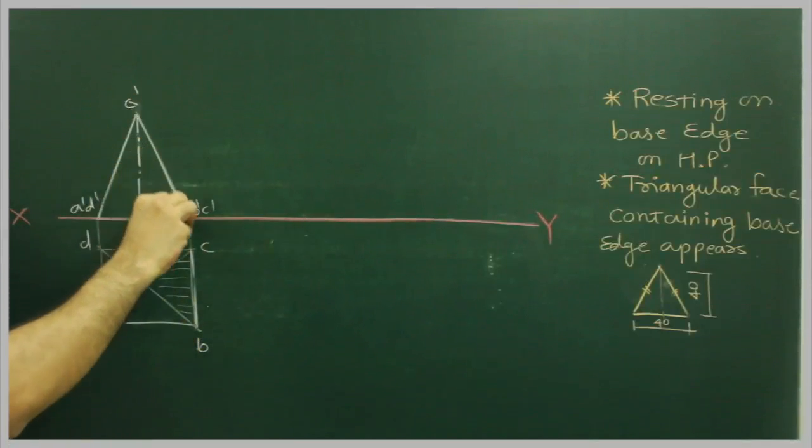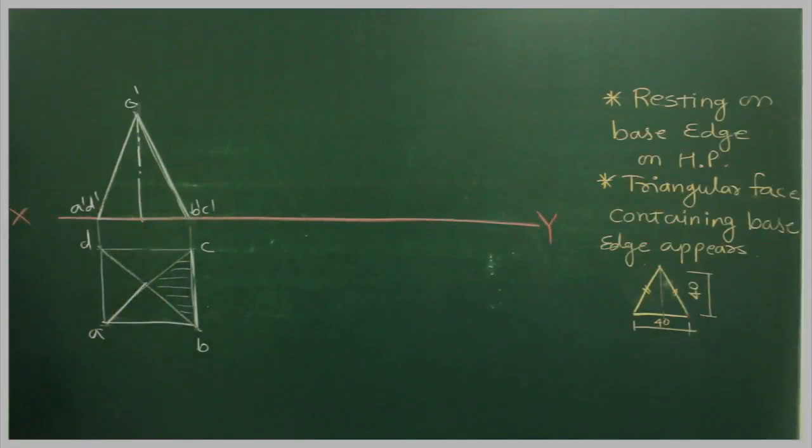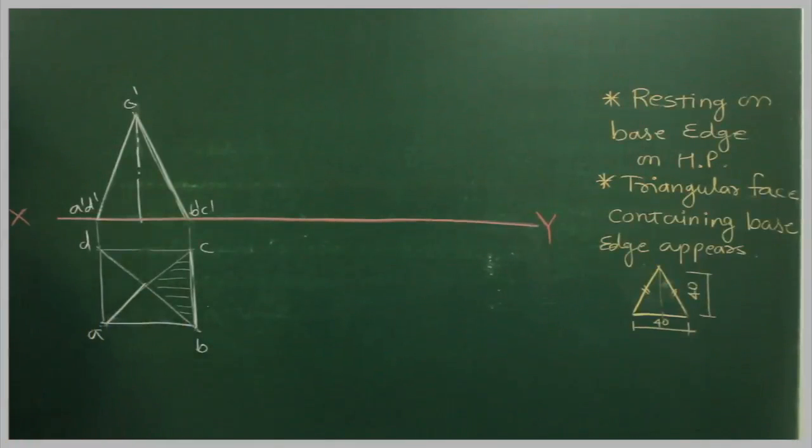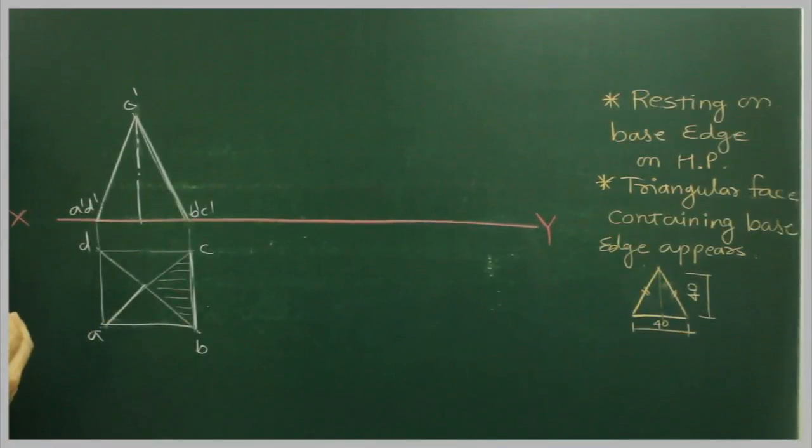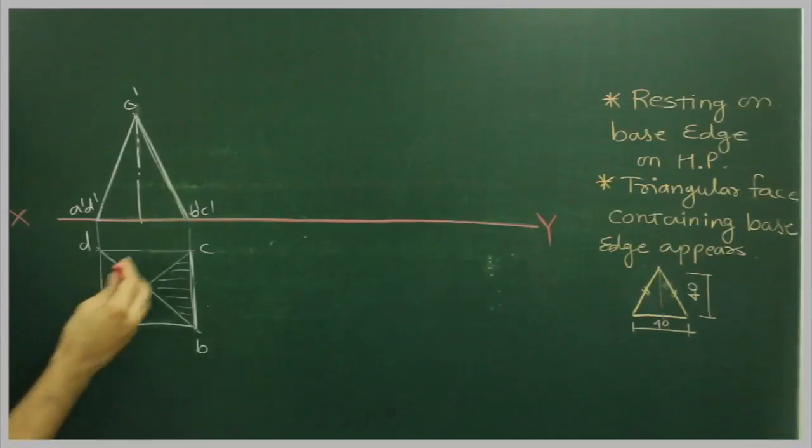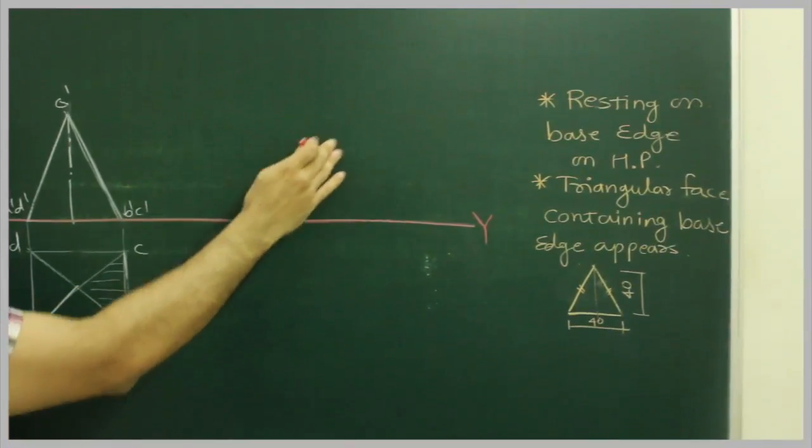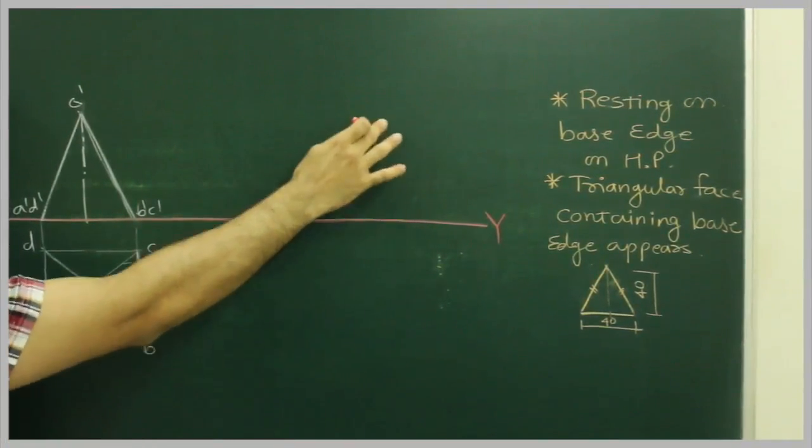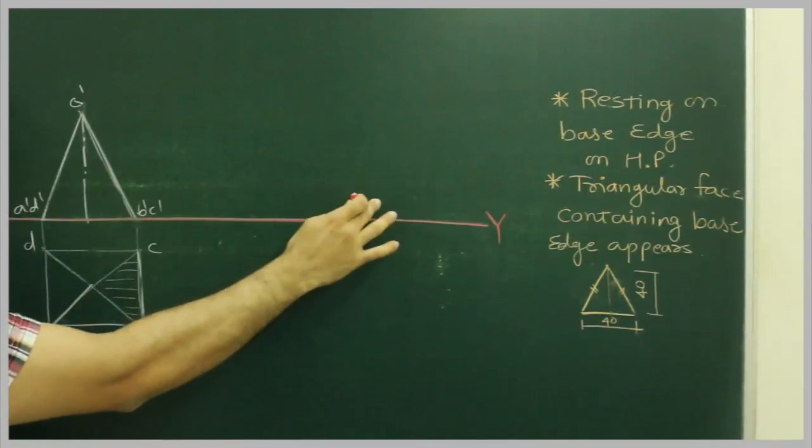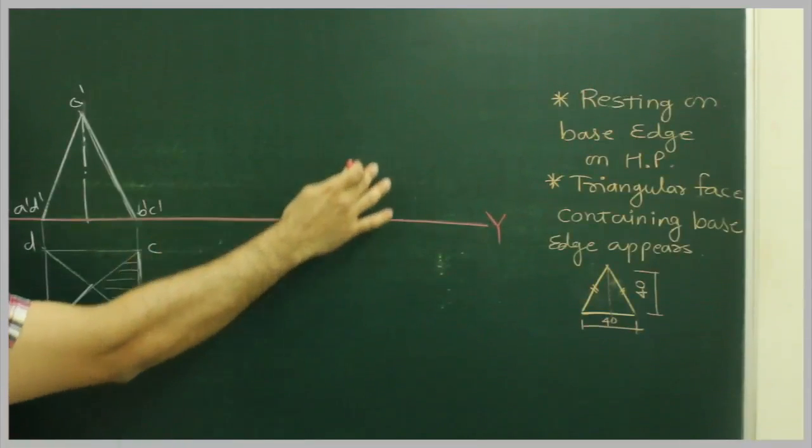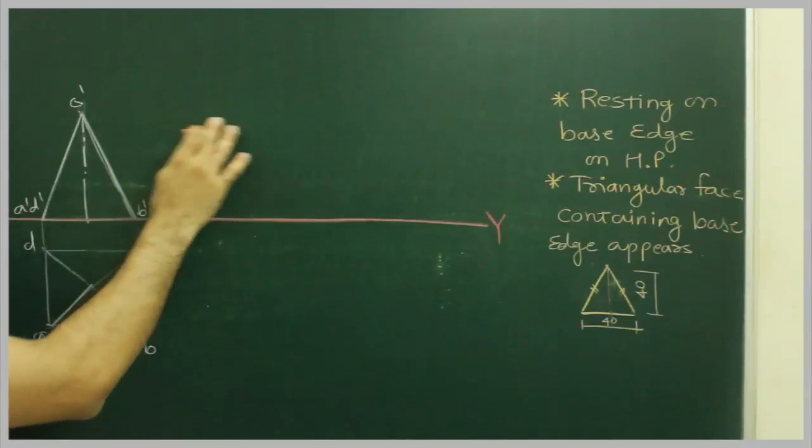So what we will do, we will take this length, we will take O dash to P dash C dash and we will tilt in such a fashion that it will be 40. Now see, if you see in this case, the triangle of base containing that base edge appears as an isosceles triangle in front view, in elevation. That means they are talking about this right now, that in final stage, you will be able to see base 40 and altitude 40. So what we are doing, we are taking that altitude 40 and we are using it for the second stage.